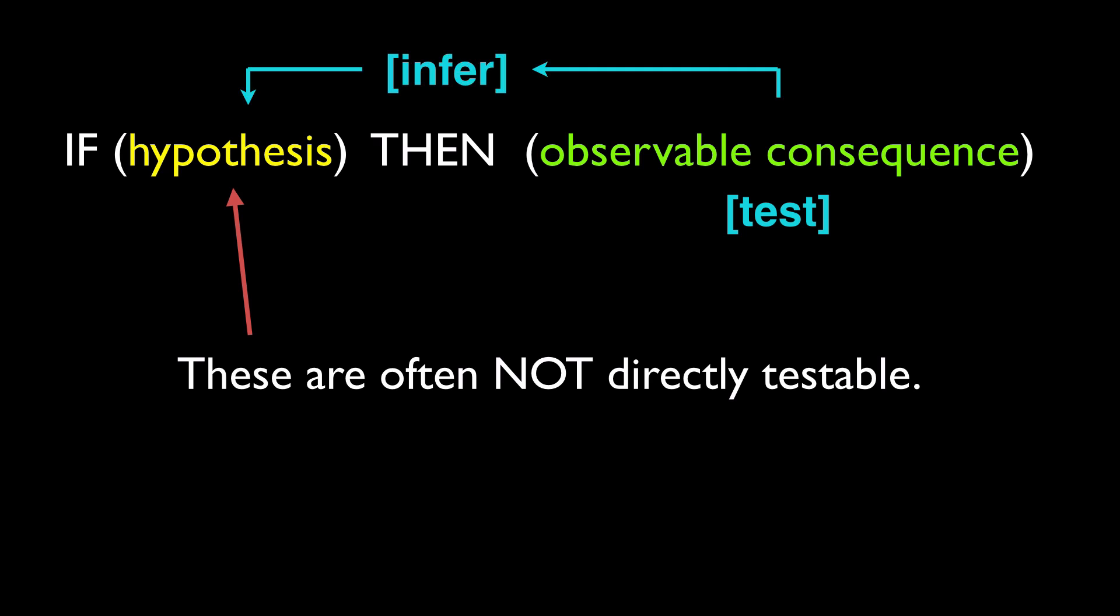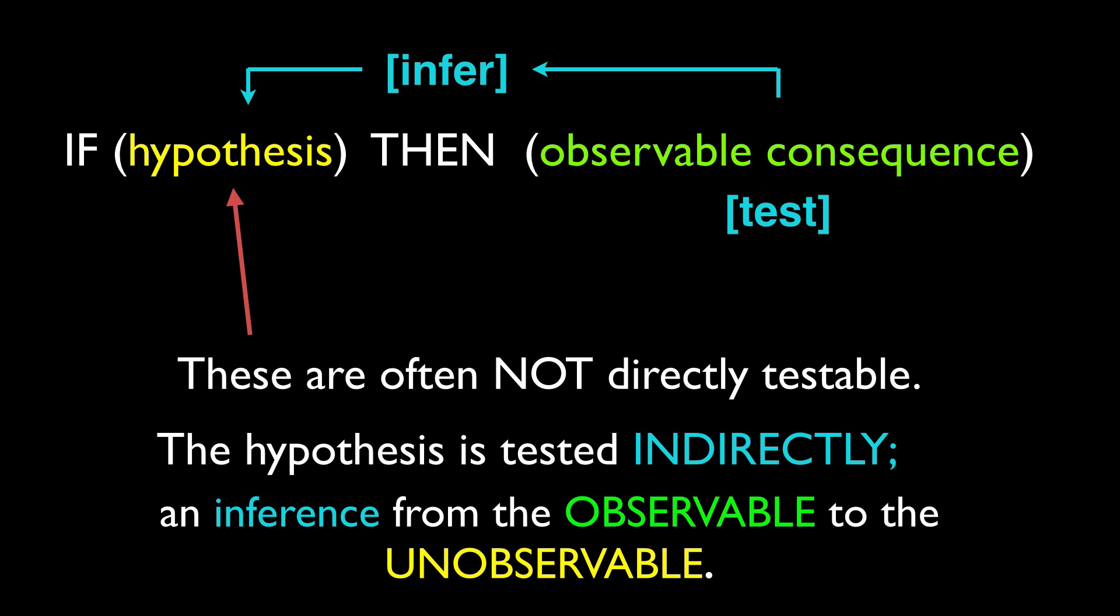This reasoning, by its nature, is indirect. It's an inference from claims about directly observable phenomena to claims about phenomena that are not directly observable. It's generally the case, in fact, that the core theoretical claims of any interesting scientific theory are going to be confirmed or falsified indirectly in this way, not through direct observation.